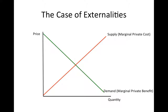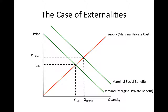Externalities can be positive as well. In markets with positive externalities, the total benefits from the good exceed the benefits to the people who are buying the good. For example, if I invest a lot in making my house and yard look nice, I benefit, but my neighbors may benefit as well from increased property values. In markets with positive externalities, the marginal social benefits from a good are greater than the marginal private benefits. In these markets, the market quantity is lower than the optimal quantity.